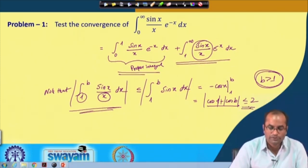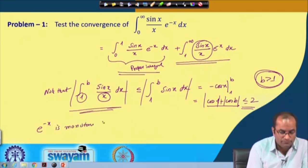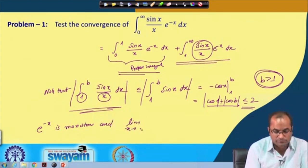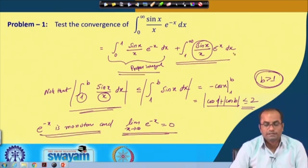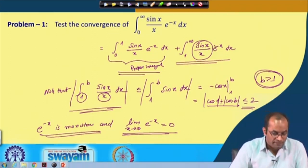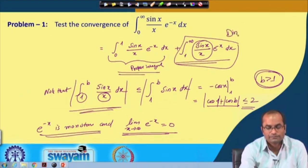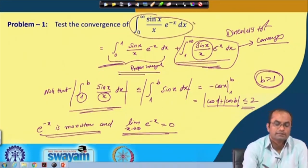The exponential function e^(−x) is monotone decreasing and approaches 0 as x approaches infinity. Since the integral of sin(x)/x is uniformly bounded and g(x) = e^(−x) is monotone decreasing to 0, we can apply the Dirichlet test to conclude that the integral from 1 to infinity of sin(x)/x · e^(−x) converges. Together with the proper integral part, the original integral from 0 to infinity converges.